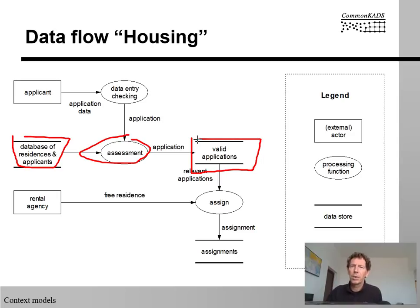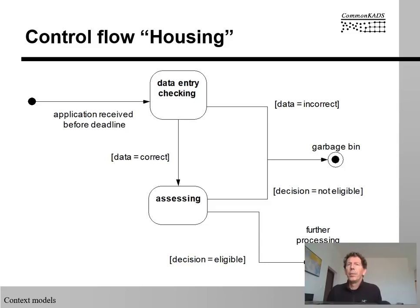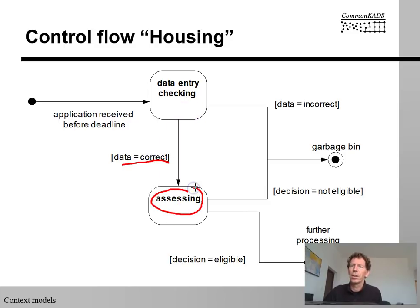For example, people are doing an assessment task, and for this they use a database of residents and applicants, and they produce valid applications. As you saw in the worksheet, we should not only describe the dependencies between the tasks, but also the conditions that should hold before and after the task. And this is exactly what control flow diagrams do in UML — they give us these guards. So this is a precondition that must hold before this task can be executed. These diagrams really give us a handle on the conditions that must hold in the spreadsheet.